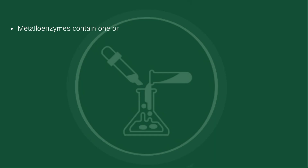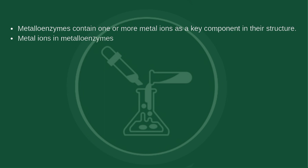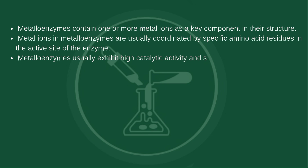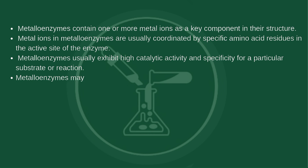Metalloenzymes contain one or more metal ions as a key component in their structure. These metal ions are usually coordinated by specific amino acid residues in the active site. Metalloenzymes typically exhibit high catalytic activity and specificity for a particular substrate or reaction, and may require additional non-metal cofactors or co-substrates to function properly.